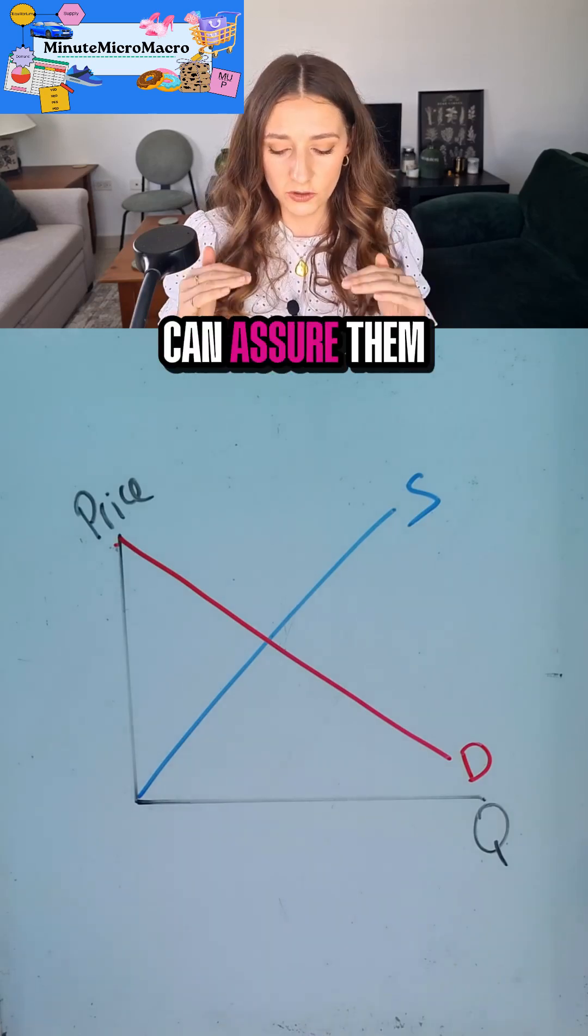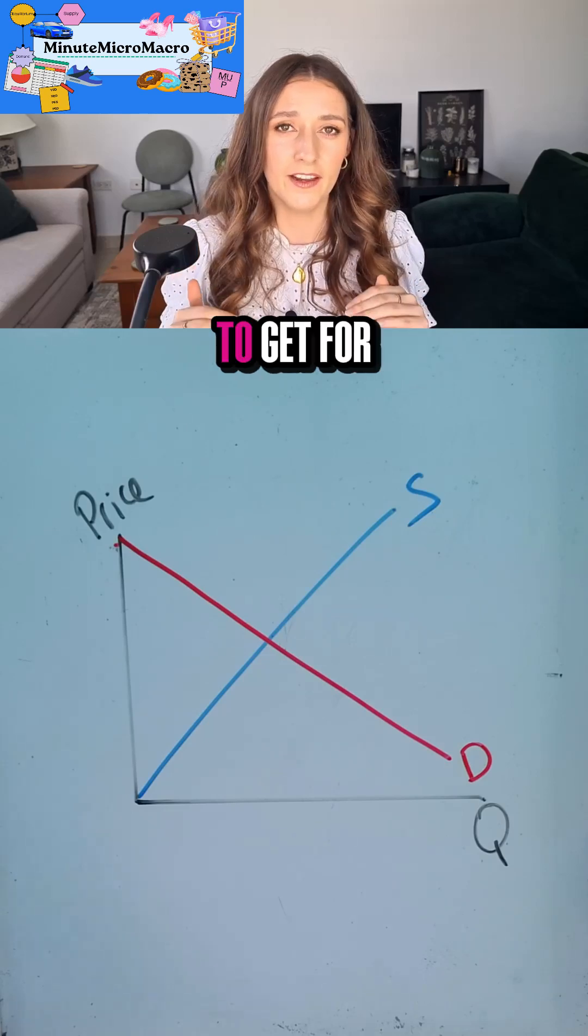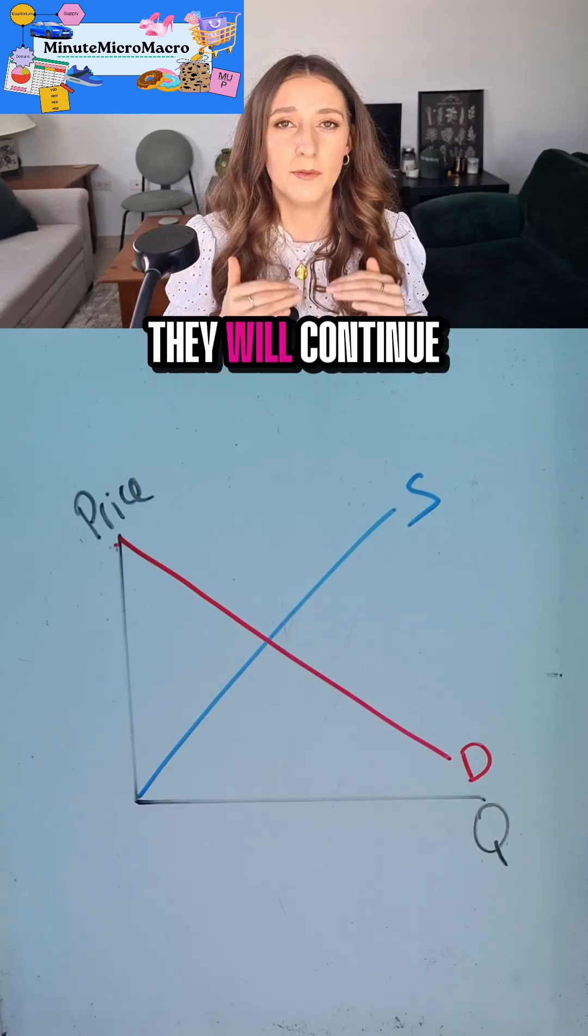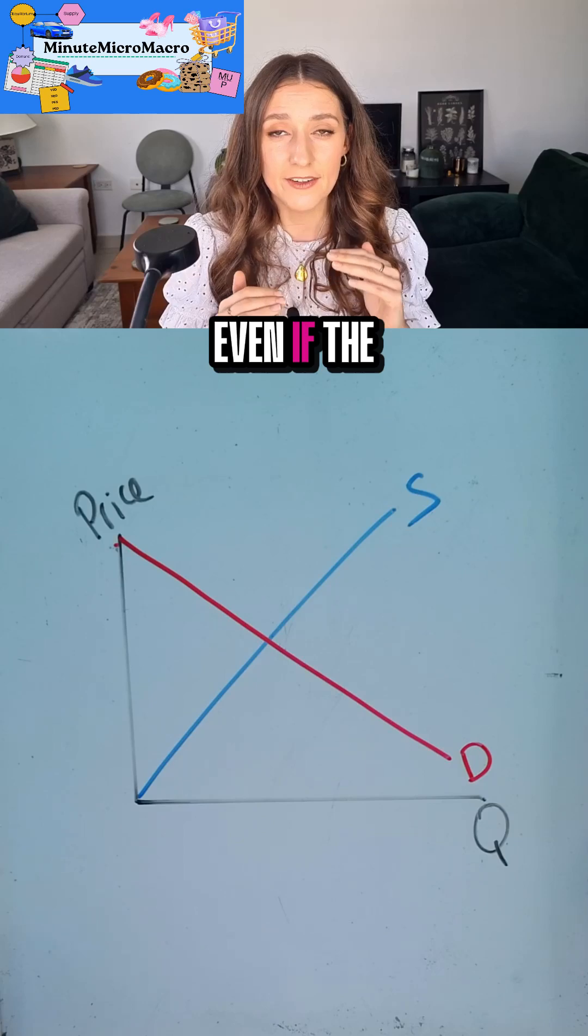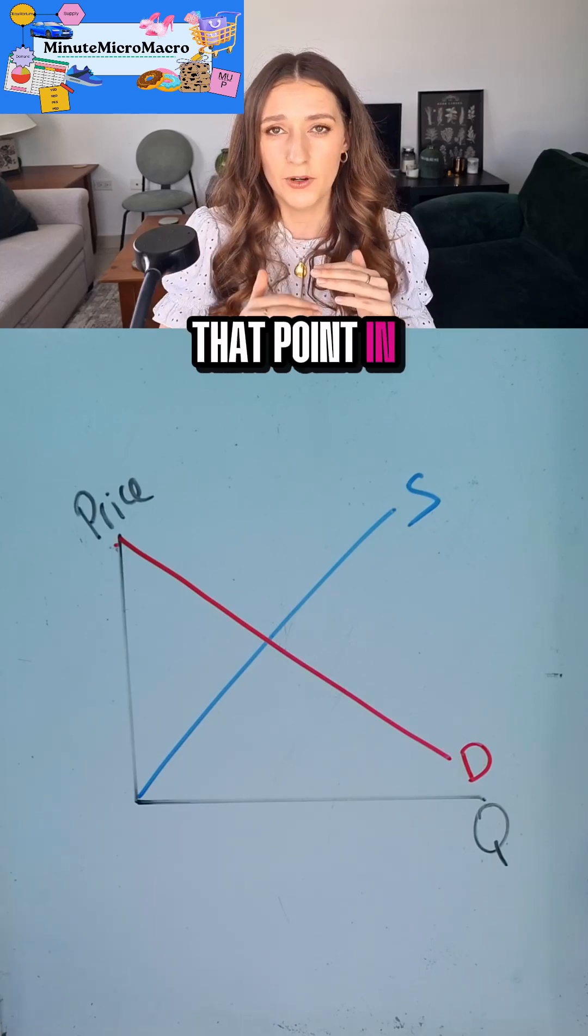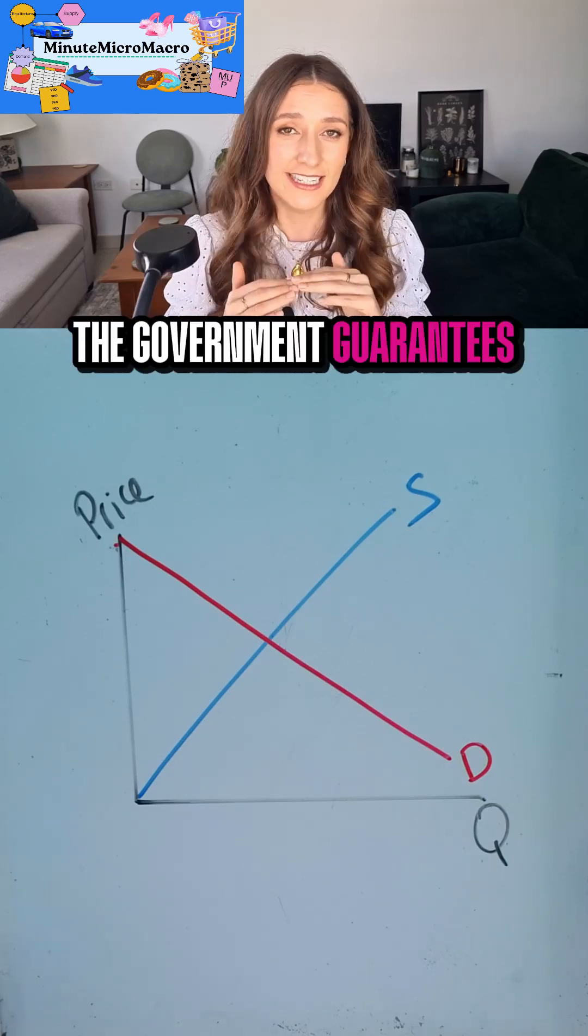So if we can assure them that there is a minimum amount that they're going to get for their grain, it means that they will continue to produce grain. Even if the price would have naturally fallen below that point in the market, the government guarantees a certain price.